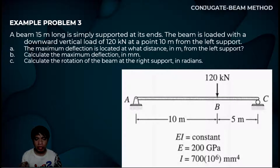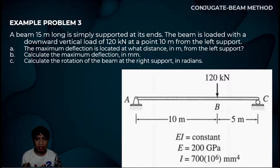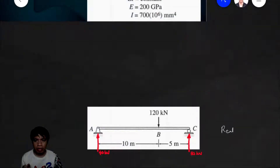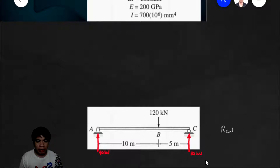So the first thing we will do is solve the reactions at support A and at support C. So we solve the reactions: at support A, 40 kilonewtons, and the reaction at support C is 80 kilonewtons.